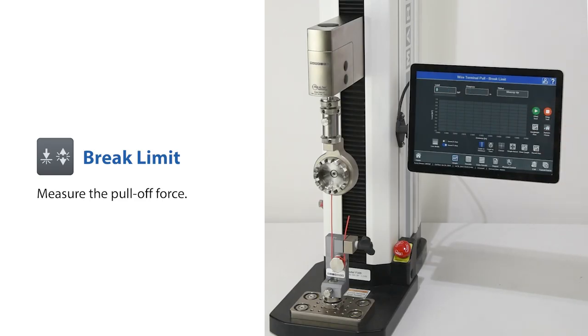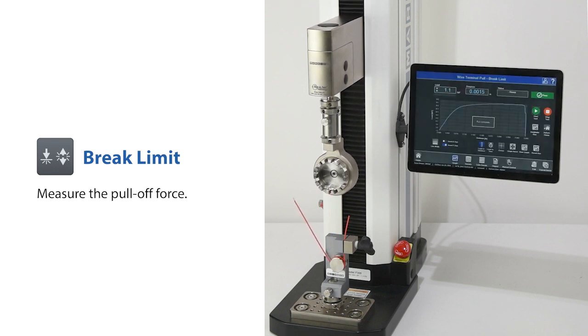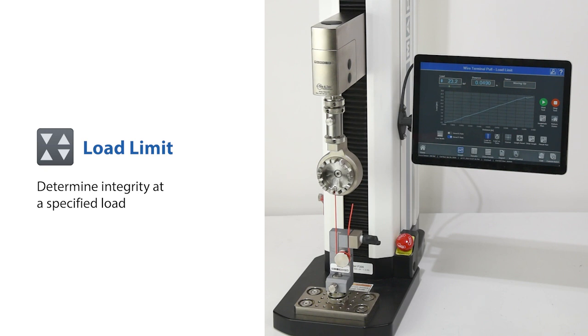A brake limit test is used to determine the force at which a wire crimp will fail. A load limit test is used to determine whether a wire terminal will withstand a specified load.